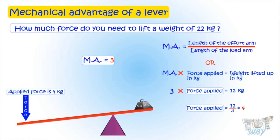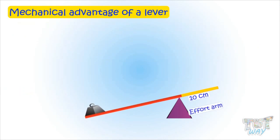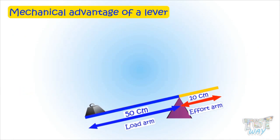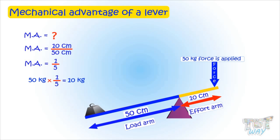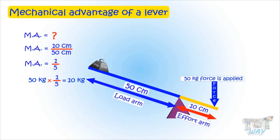Here are some more examples. Here the effort arm is smaller than the load arm, so it's difficult to lift the load. The effort arm is 10 centimeters and the load arm is 50 centimeters, so the mechanical advantage is 1 by 5. That means it will multiply the force applied by 1/5 — if 50 kg of force is applied, 50 multiplied by 1/5 is 10 kg, so only 10 kg of force will be forwarded. It will actually reduce the effort applied.